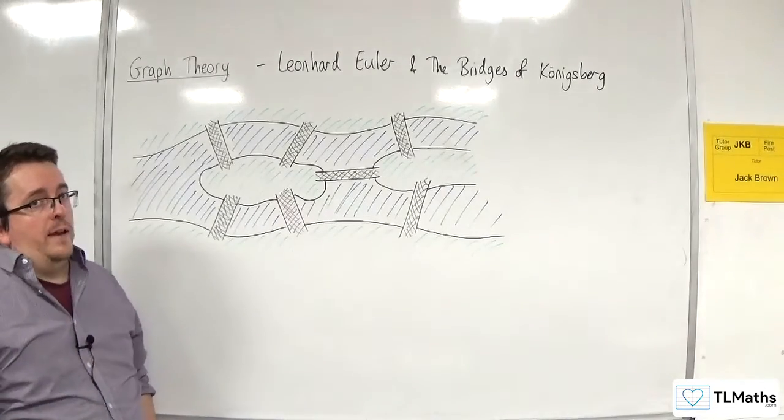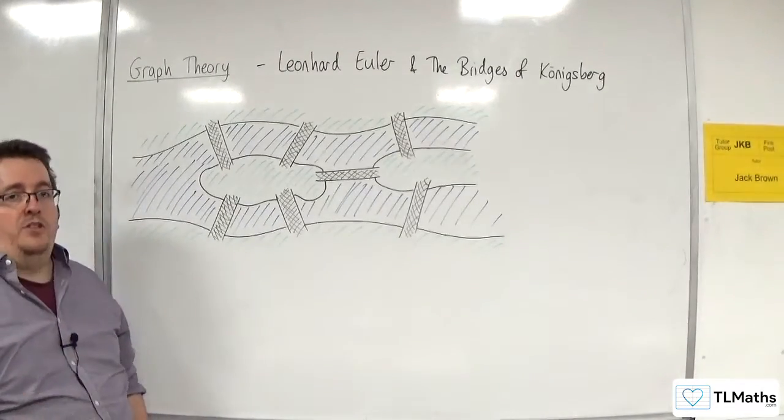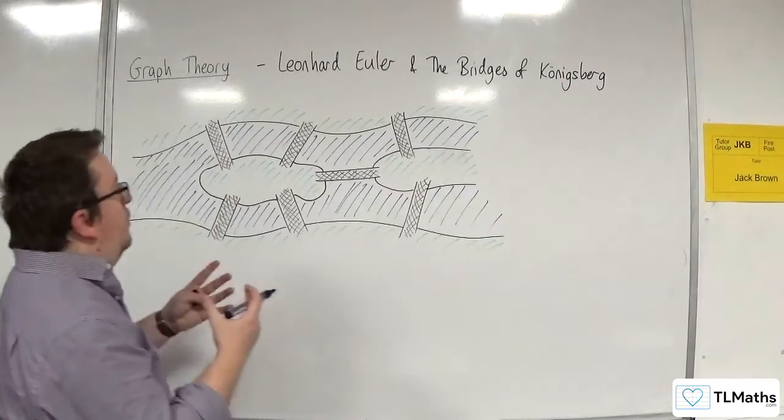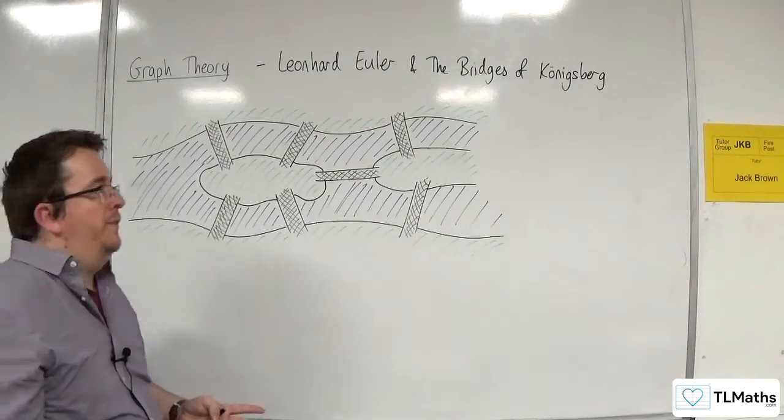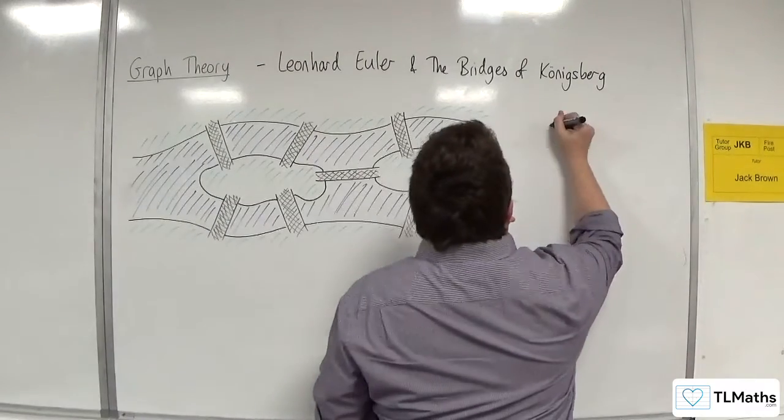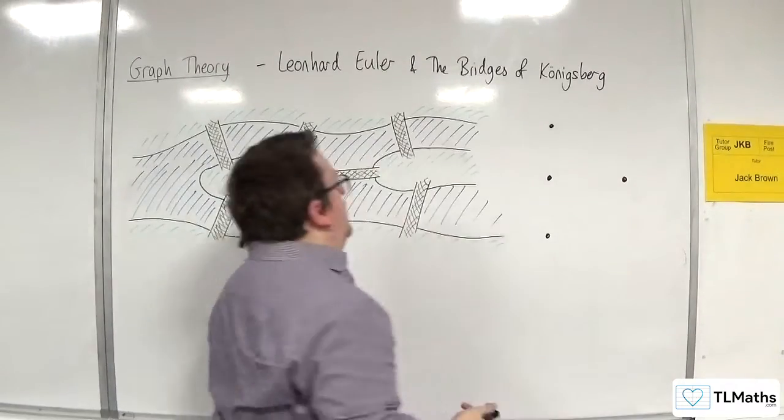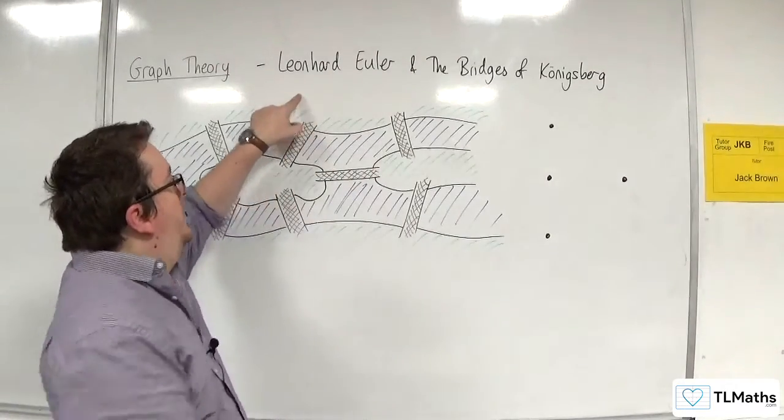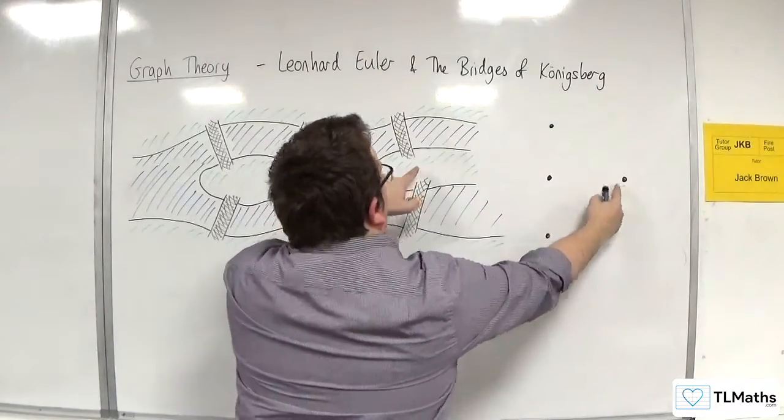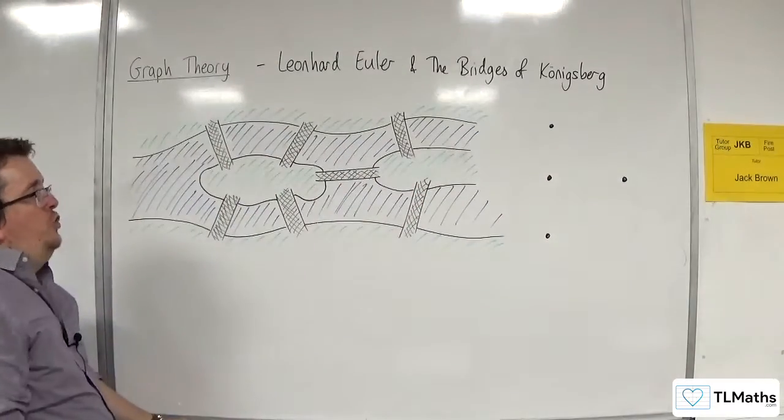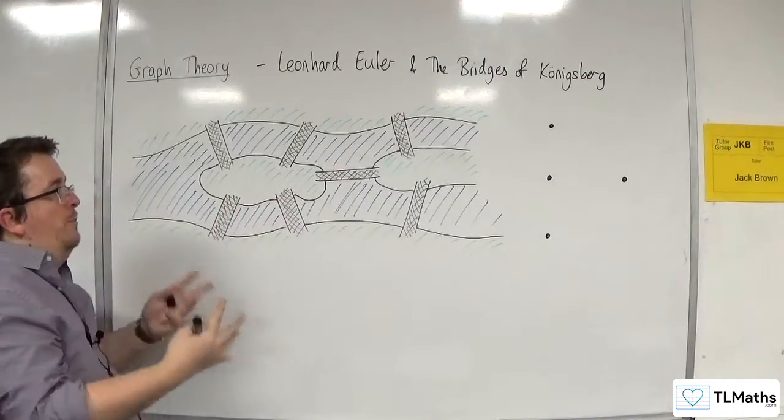Now, what Euler did was he took this problem and turned it into a graph. So because you've got four land masses, you can represent those land masses by four vertices. So this is the first dot. Then you've got second dot, third dot, and this one is the fourth dot. And then you can join them up and representing, so the edges of your graph represent the bridges.